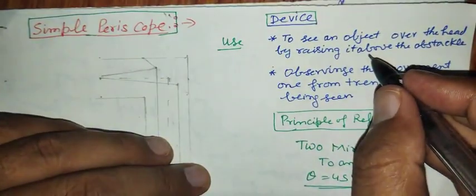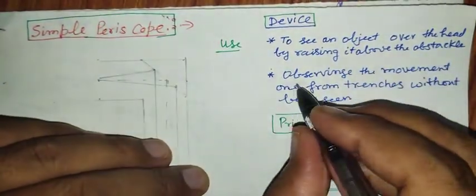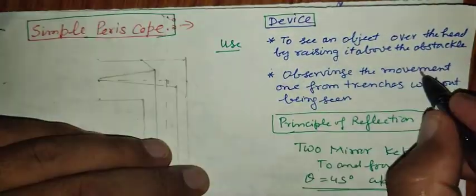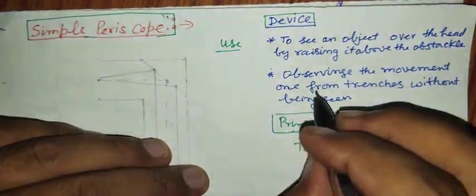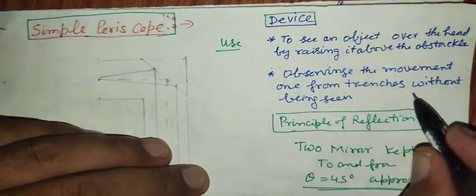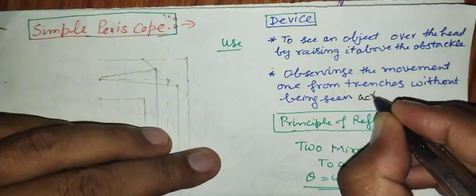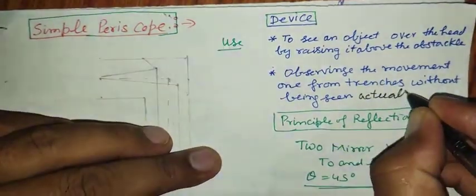First of all, if one wants to observe the movement of anyone, or normally army persons, soldiers from the trenches without being seen actually.